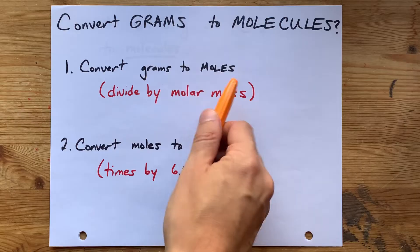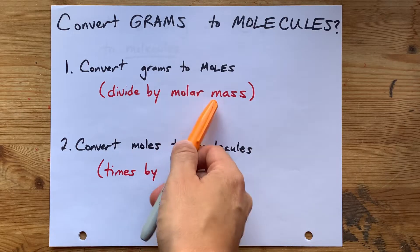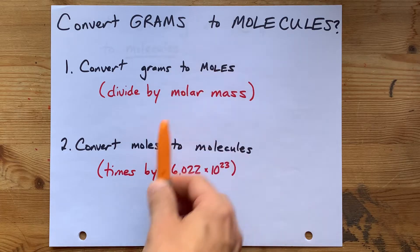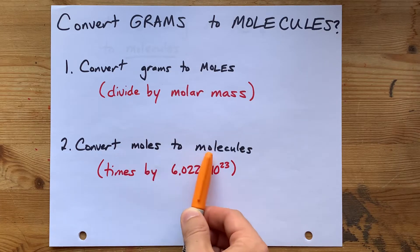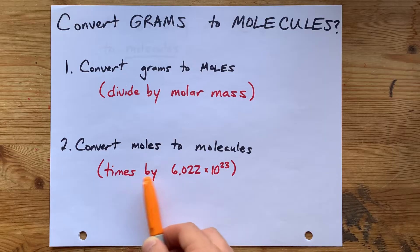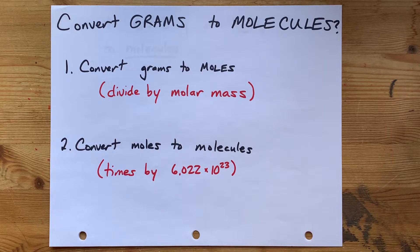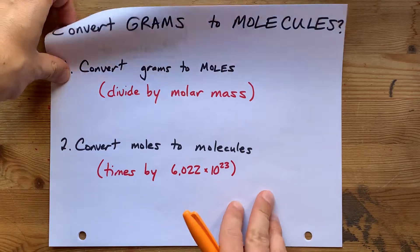The way that you do that conversion is to divide by the molar mass of the compound itself. Then, once you have moles, it's easy to convert to molecules—you'll multiply by 6.022 times 10 to the power of 23. That's Avogadro's number.